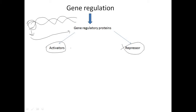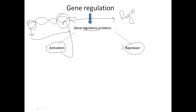Both activators and repressors will go and bind to their gene regulatory sequences, such as the promoter sequence of the DNA where RNA polymerase usually sits. Gene regulatory genes are those genes that code for regulatory proteins. Based on their function, if a regulatory protein activates transcription, it is a positive regulator. If it inhibits transcription, it is a negative regulator.